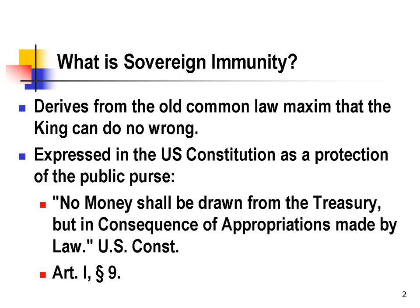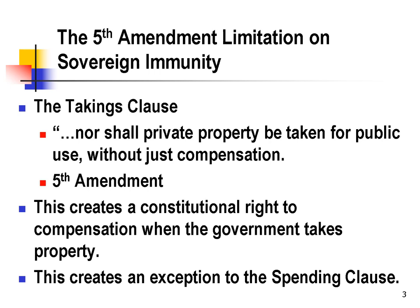By sovereign immunity, we mean that you can't sue the government for money. The Fifth Amendment, part of the Bill of Rights, modifies the Appropriations Clause by creating a right to sue the government for damages in the case of takings. From the Fifth Amendment: nor shall private property be taken for public use without just compensation. This creates a constitutional right to compensation when the government takes property, and overrides the limits of the Appropriations Clause.